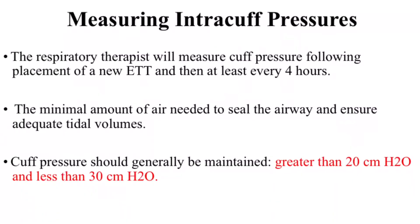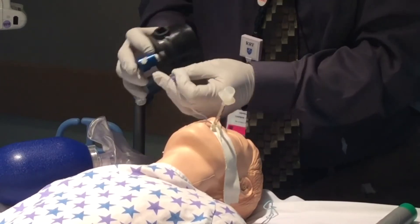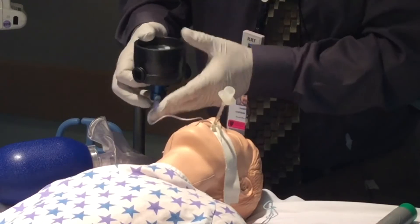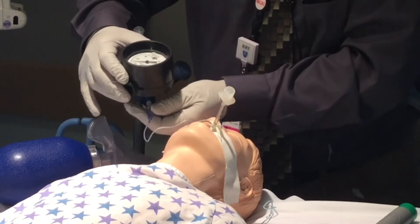The respiratory therapist will measure cuff pressure following placement of a new endotracheal tube and then at least every four hours. We generally inflate the cuff with the minimal amount of air needed to seal the airway and ensure adequate tidal volumes. Cuff pressure should generally be maintained greater than 20 centimeters of water and less than 30. I'll use a manometer with a syringe — connect to the tube and inflate to a pressure greater than 20 but less than 30 centimeters of water.